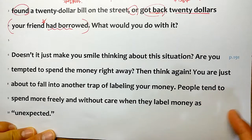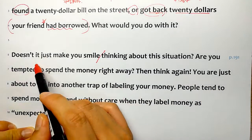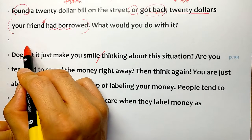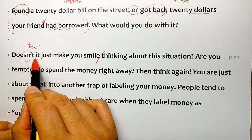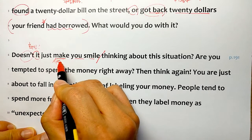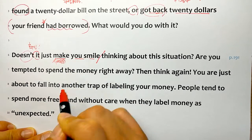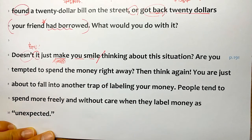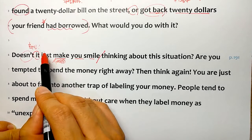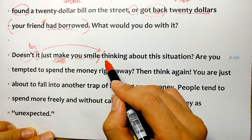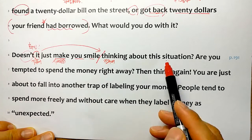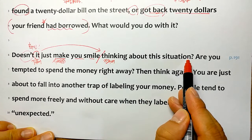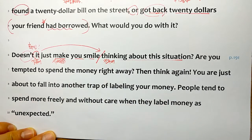Doesn't it just make you smile thinking about this situation? - doesn't로 물어볼 때는 확인하는 거예요. 기쁘지 않을까요? 그것이 just make you smile - 사역동사죠. 당신을 미소짓게 만들지 않을까요? it은 가주어고 진주어는 여기 있죠. thinking about this situation - 이 상황에 대해서 생각하는 것이 당신을 미소짓게 만들겠죠?